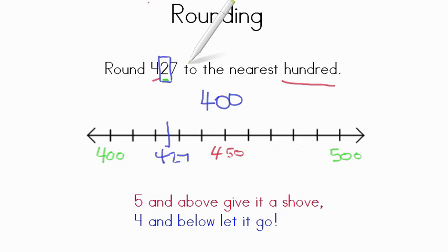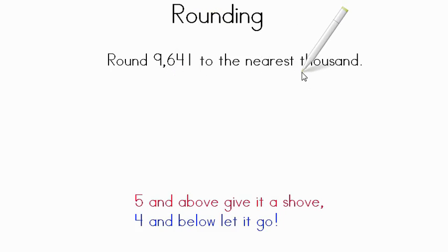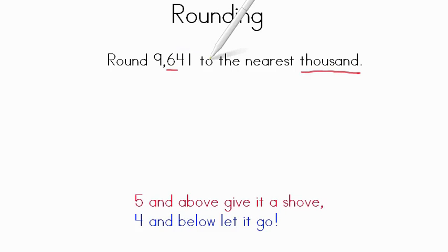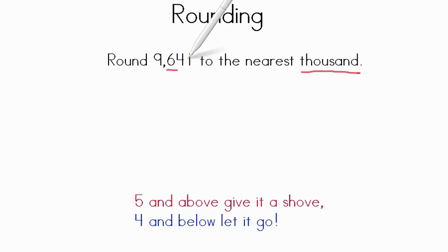Let's try another, and this time without our number line. Here we find ourselves with rounding 9,641 to the nearest thousand. If you remember my instruction, you're going to look at the number to the right of the thousands. So we have the thousands right here with 9, so we have to look at the hundreds. We have 9,641 — we don't need to worry about the 41. All we have to do is worry about the hundreds. Look at that 6: 5 and above, give it a shove. 4 and below, let it go. So we have to figure out what the two thousands are surrounding 9,641.